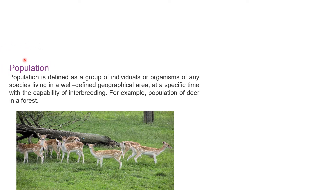Moving on to the second part of the chapter — population. Population is defined as a group of individuals or organisms of any species living in a well-defined geographical area at a specific time, with the capacity to interbreed — that means to reproduce. For example, the population of deer in a forest — this group of organisms living in a well-defined geographical area (the forest) with the capacity to reproduce constitutes a population.